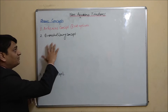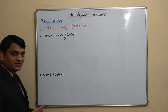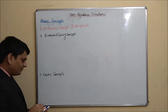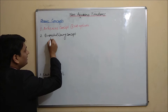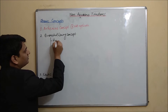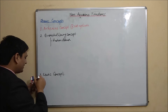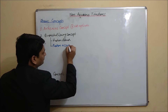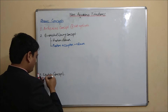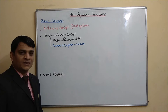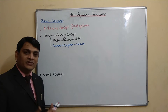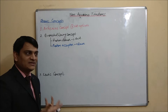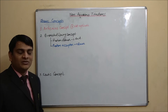Now coming to the second one, which is the Bronsted-Lowry theory. According to this concept, acid is a proton donor and base is a proton acceptor. Acid can donate a proton only when a base is present for accepting that proton. This is the limitation of the Bronsted-Lowry concept.